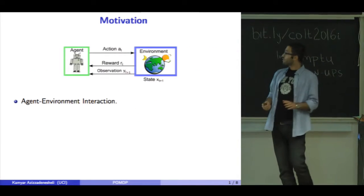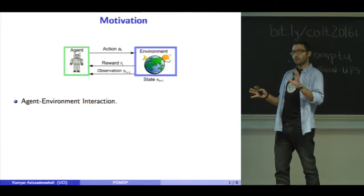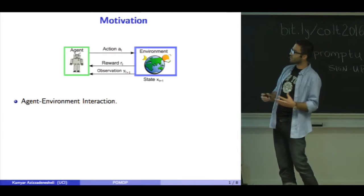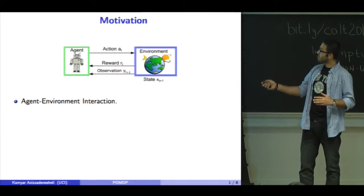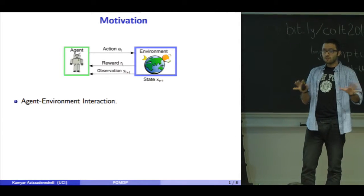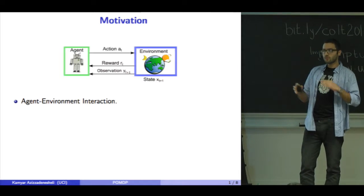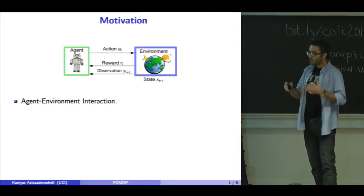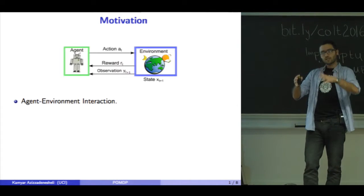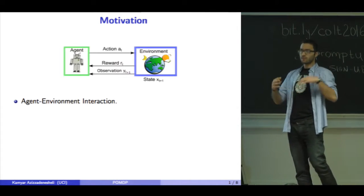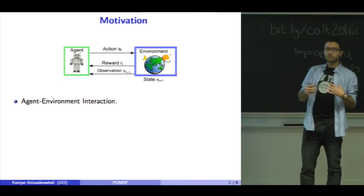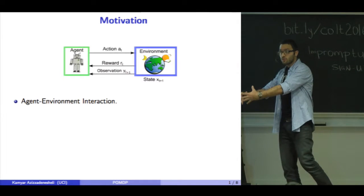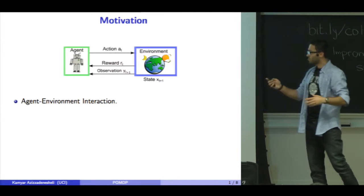In reinforcement learning, we study agent-environment interaction. At each time step, the environment is in some state which is not observable. The agent chooses an action and applies it to the environment. Based on that action and the hidden state, we receive some reward, and the environment transitions to a new hidden state and provides an observation.